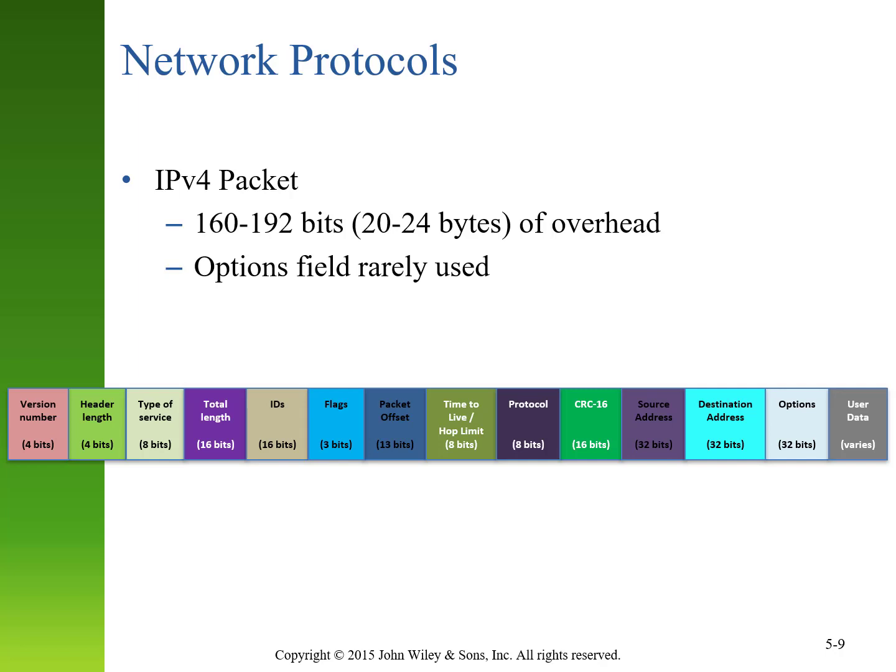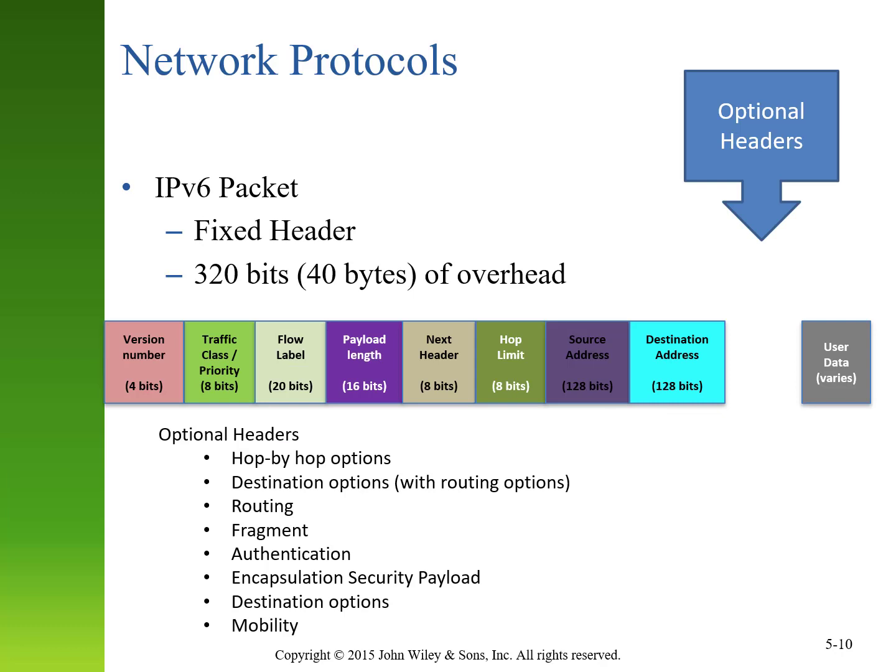Most of the options fields in IPv4 are rarely used today, which is one reason IPv6 was developed. IPv6 has a larger header of 40 bytes, but with information relevant to modern networks. It still has source and destination addresses, now four times larger. There's less overhead for versioning and flow control, but it allows for managing fragmentation, authentication, encapsulation of security payloads, and various destination options — lending more flexibility to modern networks.